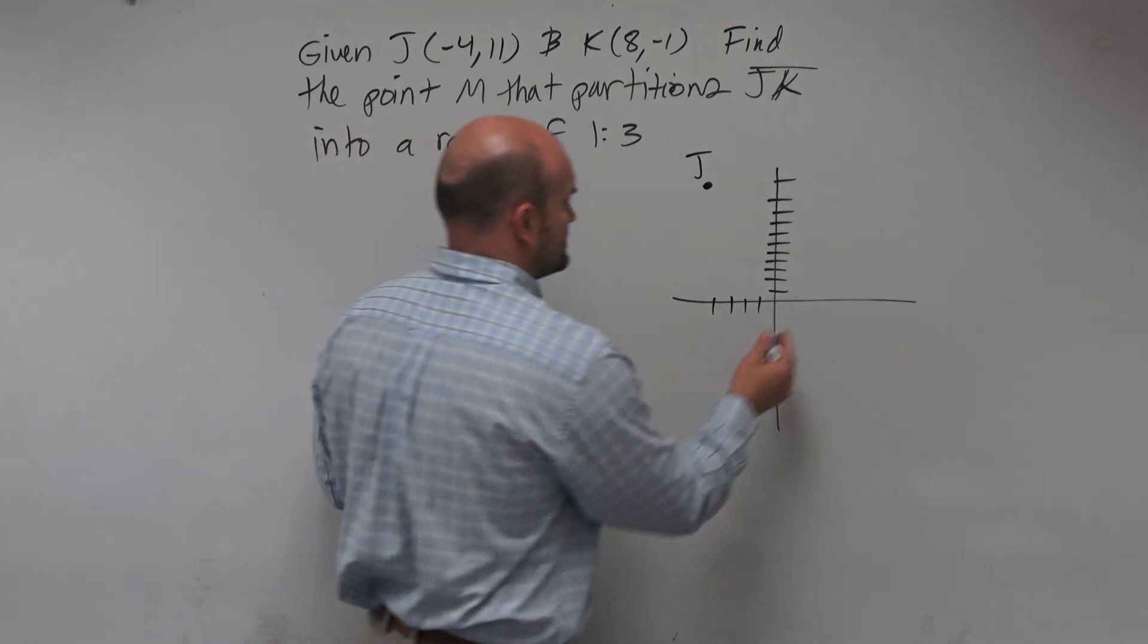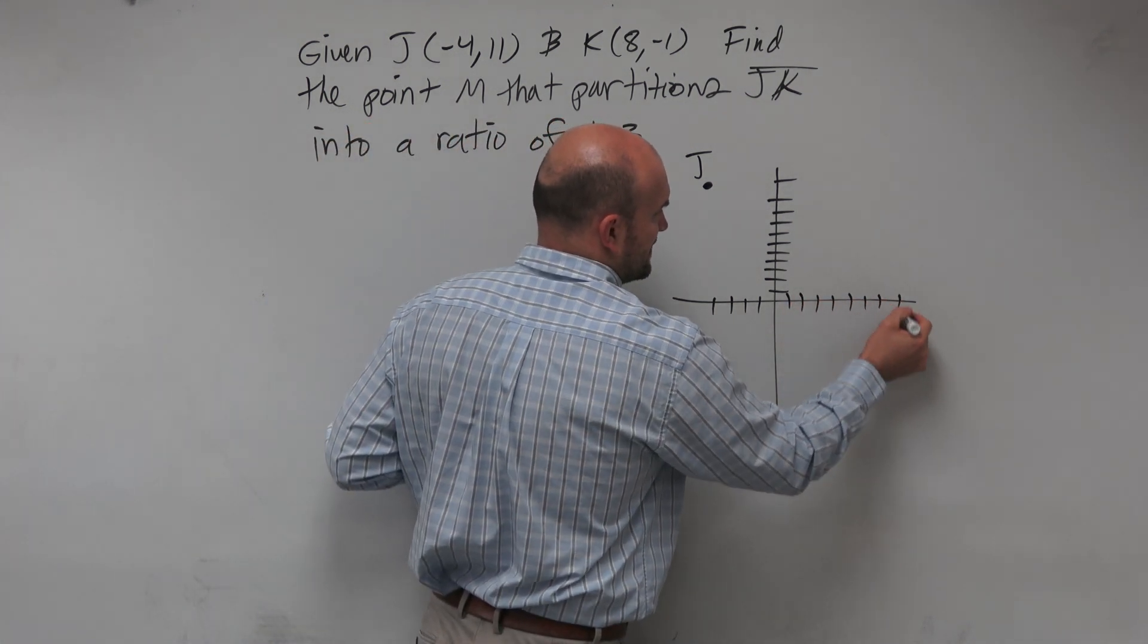And then K is going to be at 8, negative 1. So 1, 2, 3, 4, 5, 6, 7, 8, negative 1.